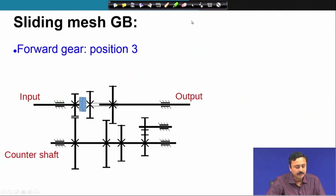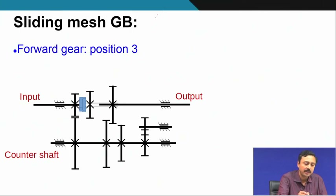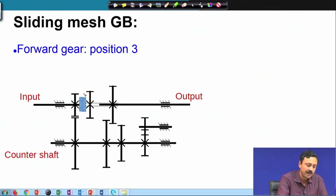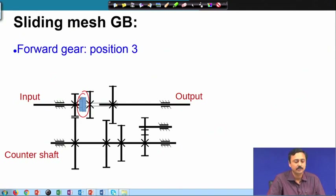In the third configuration, the sliding arrangement is pushed further left so that the dog clutch is now in contact. This will lock the input shaft to the output shaft, and therefore the transmission ratio in this case is 1.